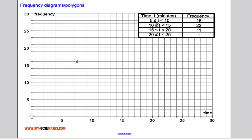12.5 now is the midpoint of this class interval. So I'll go to 12.5 and up as high as 22. 17.5 and 11, so 17.5 and 11 is here. And 22.5 and 1, so 22.5 and 1 is right here.